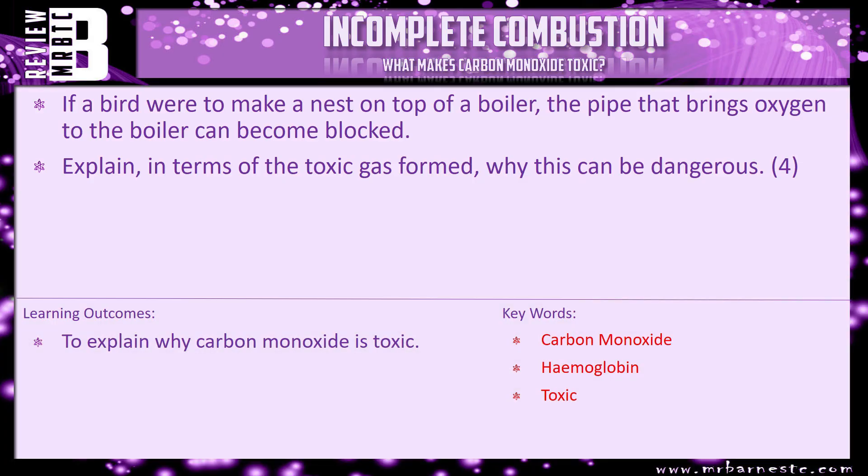That's all for this video. Here's a review question: if a bird were to make a nest on top of a boiler, the pipe that brings oxygen to the boiler can become blocked — explain in terms of the toxic gas formed why this can be dangerous. It's worth four marks. The gas formed is carbon monoxide. You could also mention that it's colourless and odourless, then talk about the haemoglobin, the fact that it gets trapped in the red blood, and the effects that has.